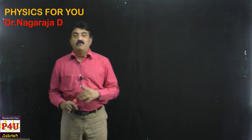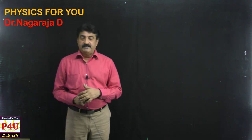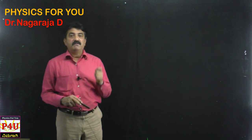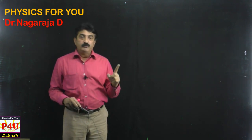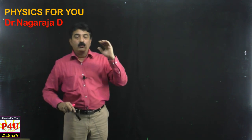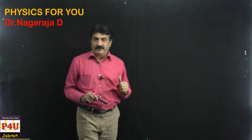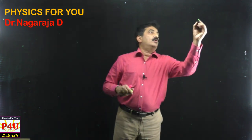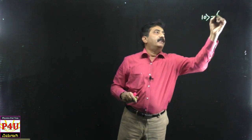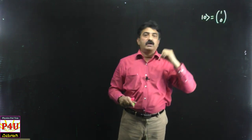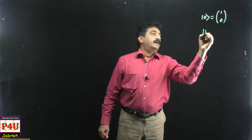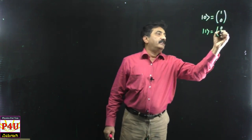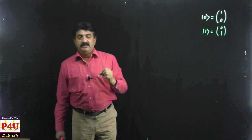Good morning, welcome back. In my previous video, I explained the concept of qubit, physics of qubit, fundamentals of quantum mechanics and vector space. In vector space, what is the meaning of dimension? And why our qubit 0 and 1 are represented only by a two-dimensional column vector? And why we have to write it as only 1,0 and 0,1? I explained in the previous video.